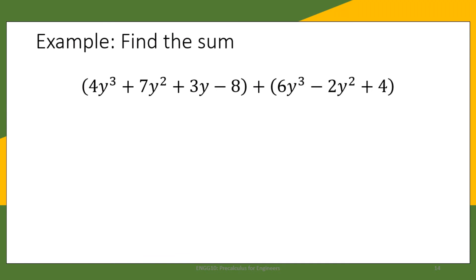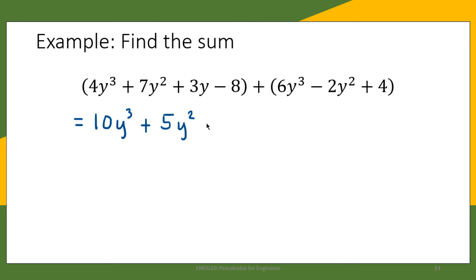Now let us solve one more example. We add 4y cubed plus 7y squared plus 3y minus 8 and 6y cubed minus 2y squared plus 4. Combining 4y cubed and 6y cubed gives 10y cubed. Combining 7y squared and negative 2y squared gives 5y squared. There is no y term in the second polynomial, so we copy 3y. And negative 8 plus 4 gives negative 4, so minus 4. The sum of the two polynomials is 10y cubed plus 5y squared plus 3y minus 4.